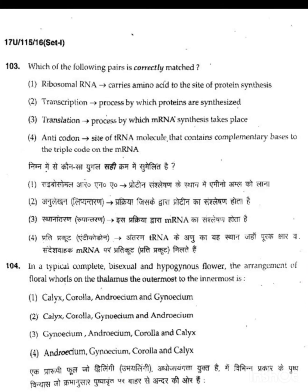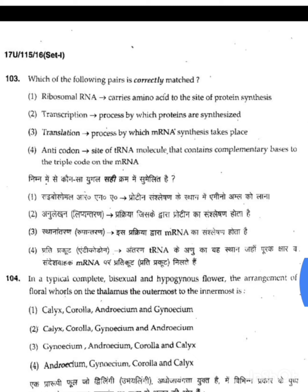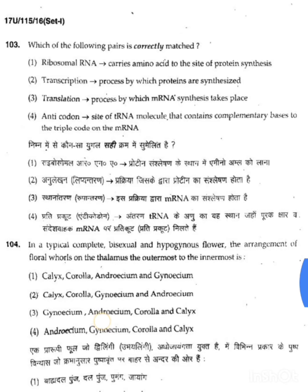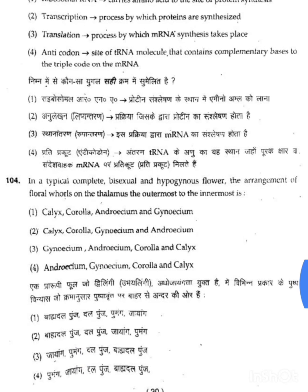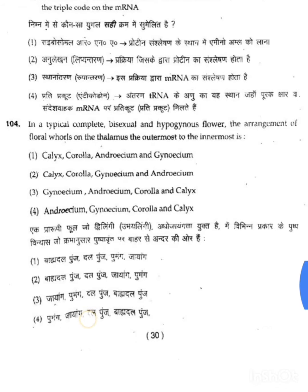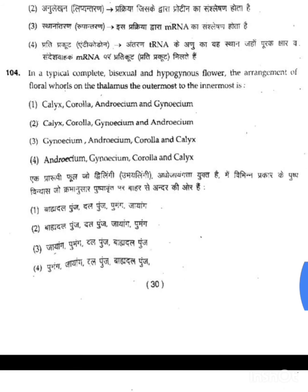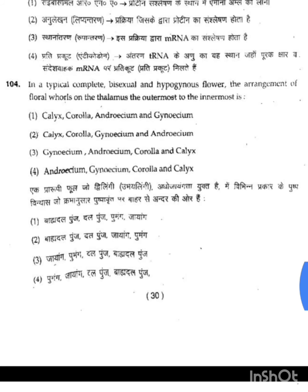Option 4 states: anticodon is a site of tRNA molecule that contains complementary bases to the triplet code of the mRNA. This is correct. The anticodon is on the tRNA and the complementary bases match the triplet code on the mRNA. So the fourth option is correct — 103's answer is option 4.